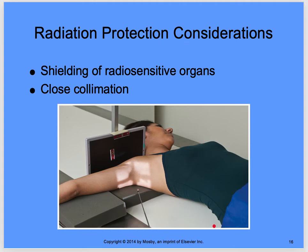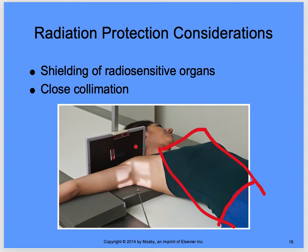For radiation protection, use a shield on the patient. For the inferior superior view, you can lay a full shield along the patient — just make sure it doesn't come into the field of view or area of interest. Use close collimation and either a small shield or full-length shield to protect radiosensitive organs.